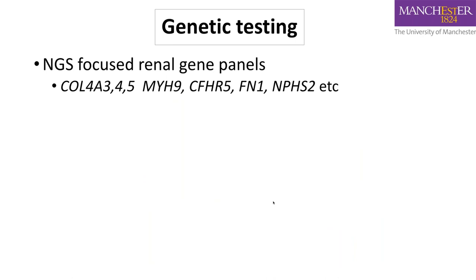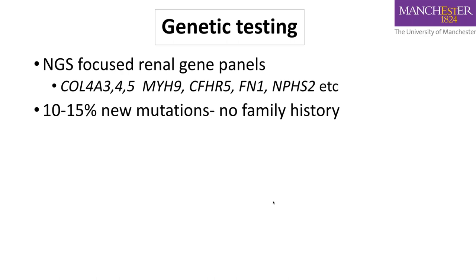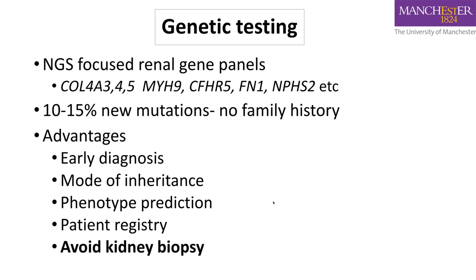In the UK, for persistent microscopic hematuria, we move on to a next-generation sequencing focused renal gene panel, available through the NHS at Guy's and Thomas' Hospital. New mutations without family history can occur in up to 15% of cases. Advantages of screening children include: early diagnosis, understanding mode of inheritance, registering patients on relevant registries, and avoiding kidney biopsy.